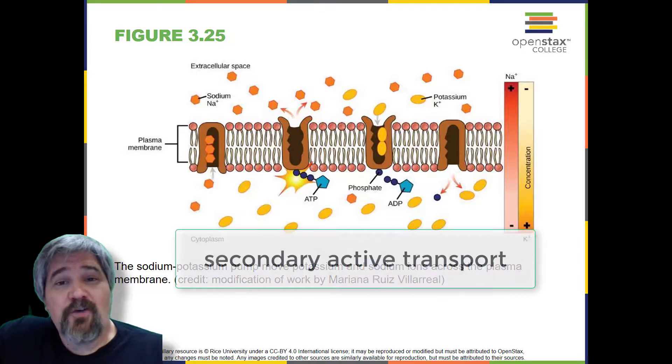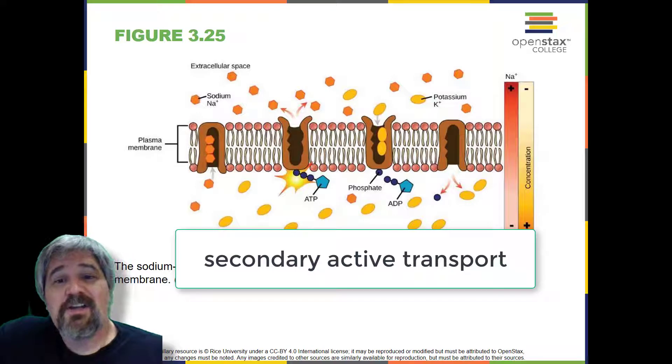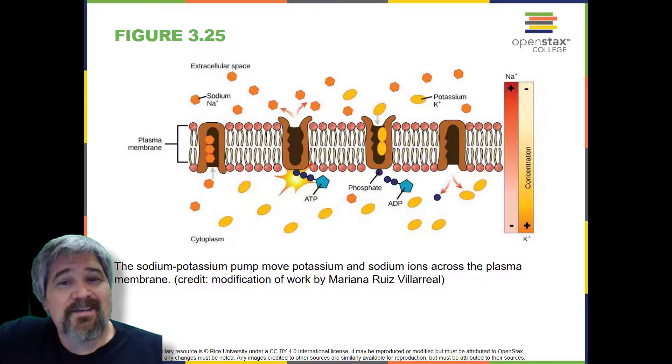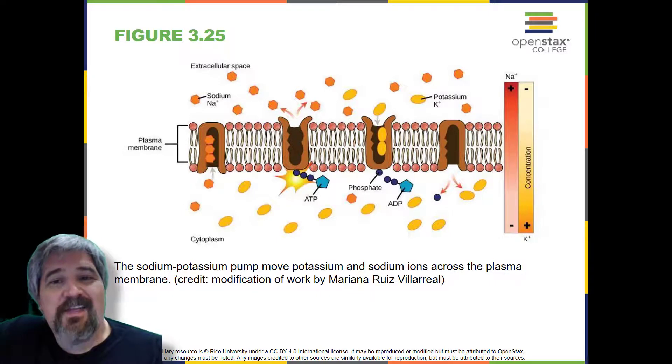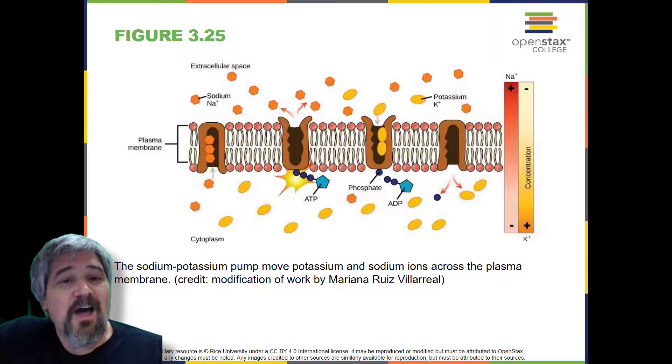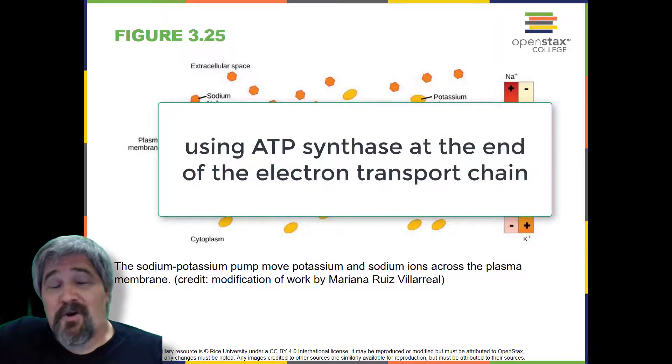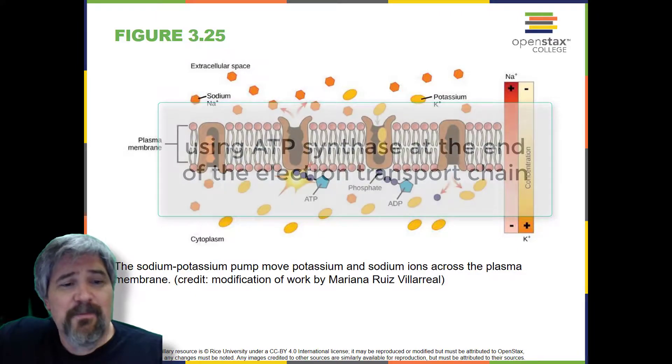Secondary active transport describes the movement of material using the energy of the electrochemical gradient established by primary active transport. Using the energy of the electrochemical gradient created by the primary active transport system, other substances such as amino acids and glucose can be brought into the cell through membrane channels. ATP itself is formed through secondary active transport using a hydrogen ion gradient in the mitochondrion, part of cellular respiration.